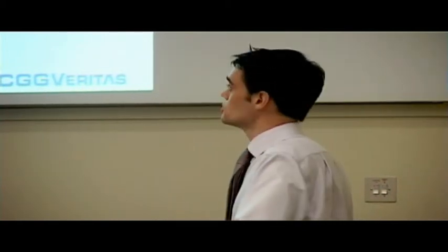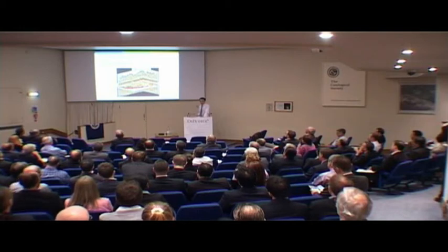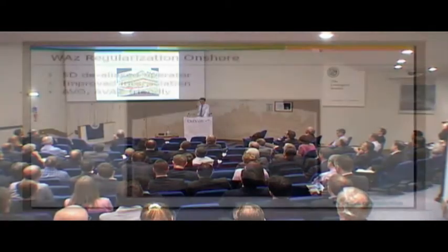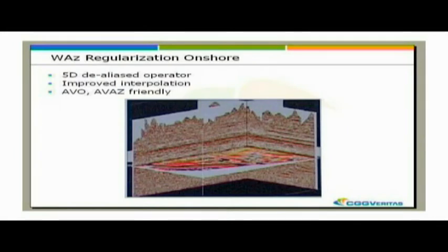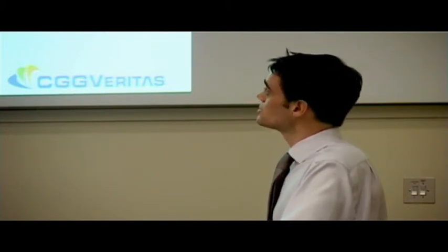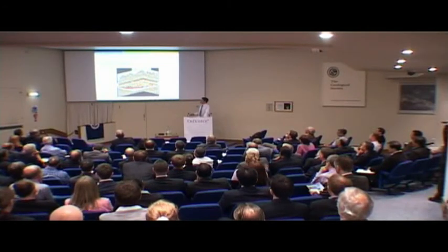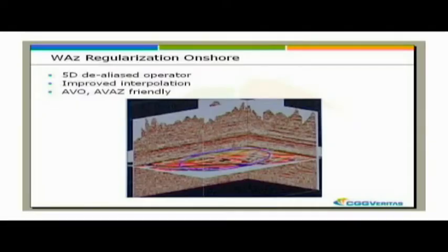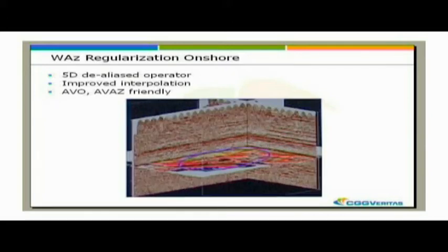We're going to look at a few pieces of the processing puzzle. Interpolation has always been an important part of the sequence, especially prior to imaging. We've developed a 5D wide azimuth interpolation and regularization operator, which came out of Calgary where they've been working with wide azimuth data for many years. As we go through these wide azimuth processing solutions, you'll see there's already a worldwide flavour to them. The 5D operator allows a better job of interpolation — it can infer larger gaps more effectively, and is AVO and amplitude versus azimuth friendly. After interpolation, things are more coherent with improved signal to noise.